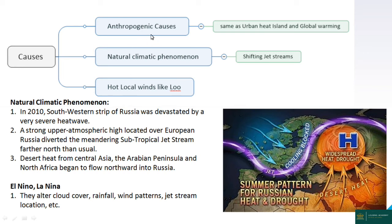Causes of heat waves include global warming, the urban heat island effect, deforestation, and natural climatic phenomena such as a shifting jet stream. For example, in 2003, Russia experienced a severe heat wave, which is a dynamic representation of how atmospheric conditions in the south-western strip of Russia can intensify heat.